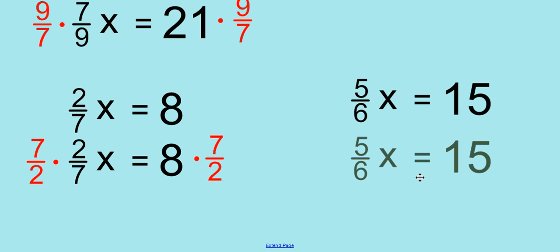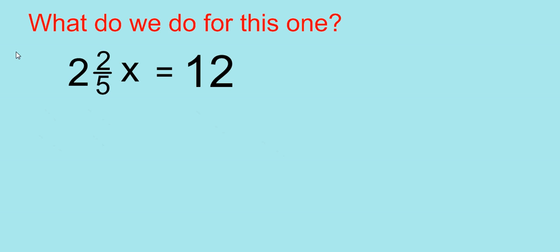One more time, 5/6 x equals 15. What are we going to multiply both sides by in this equation? That's right, the reciprocal. Good job. Now let's put this all together to try to solve a little bit more complex problem.